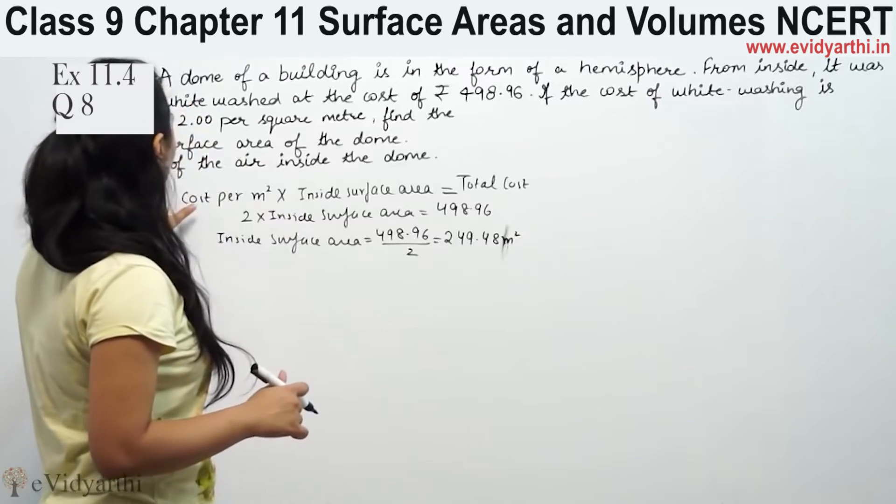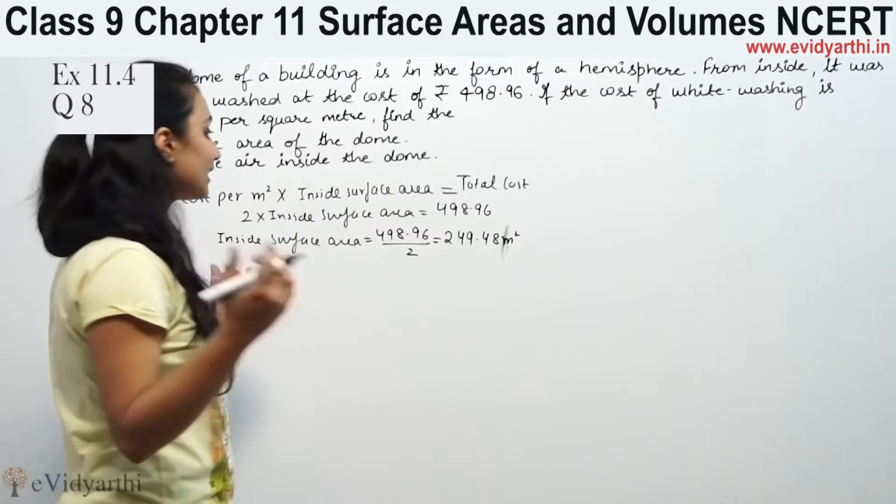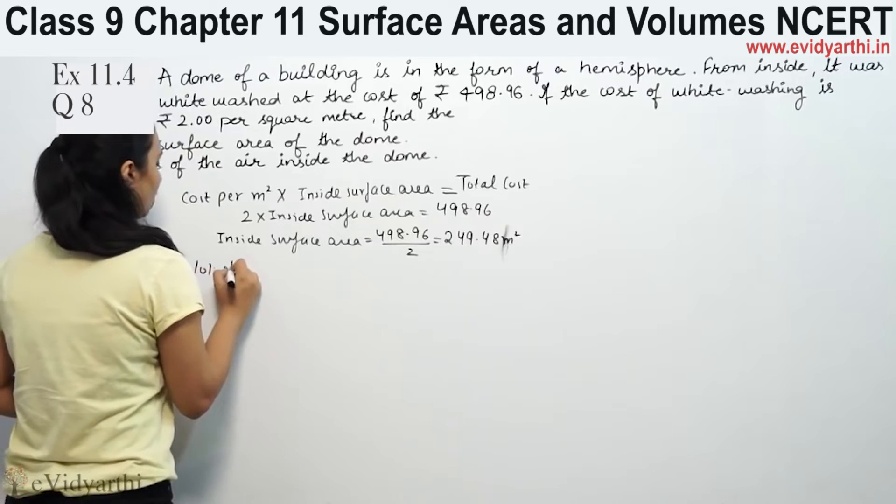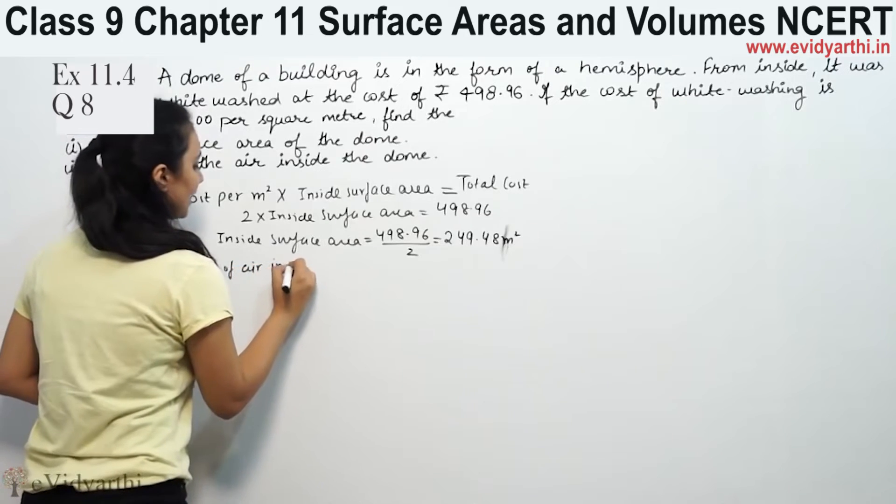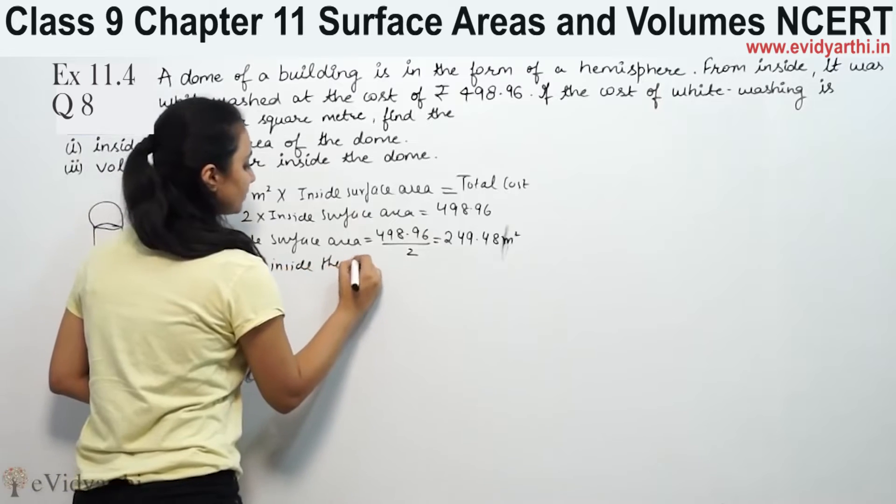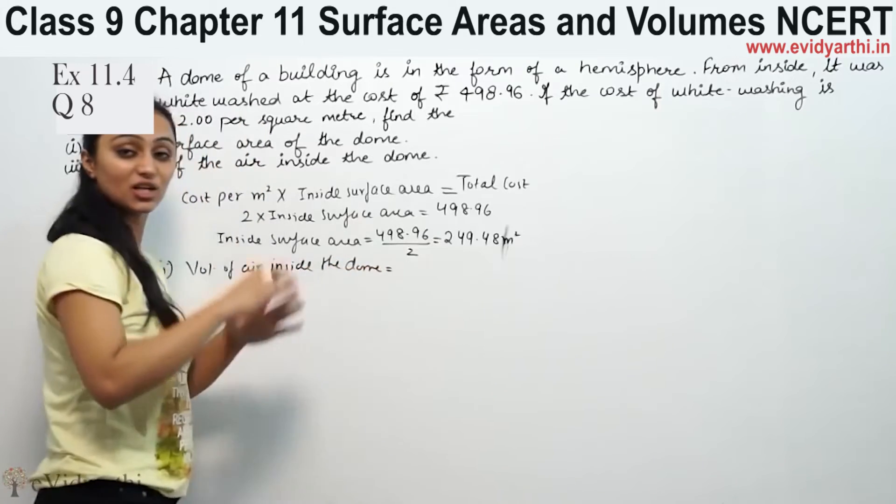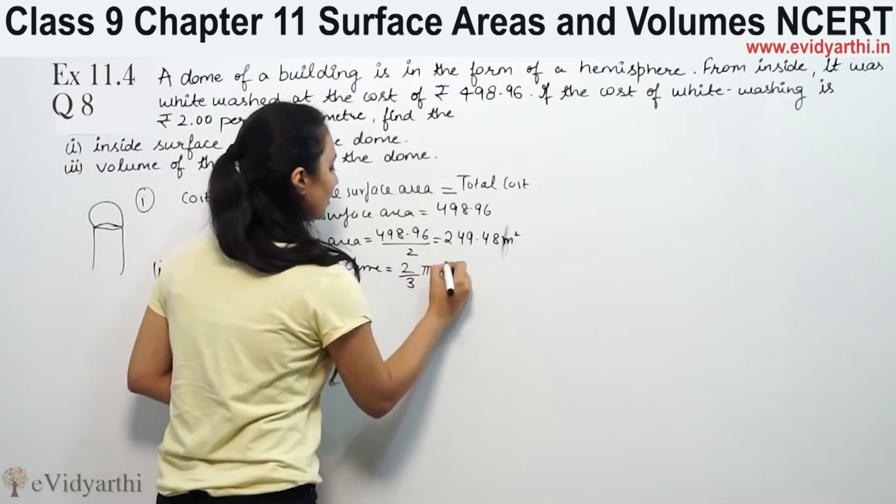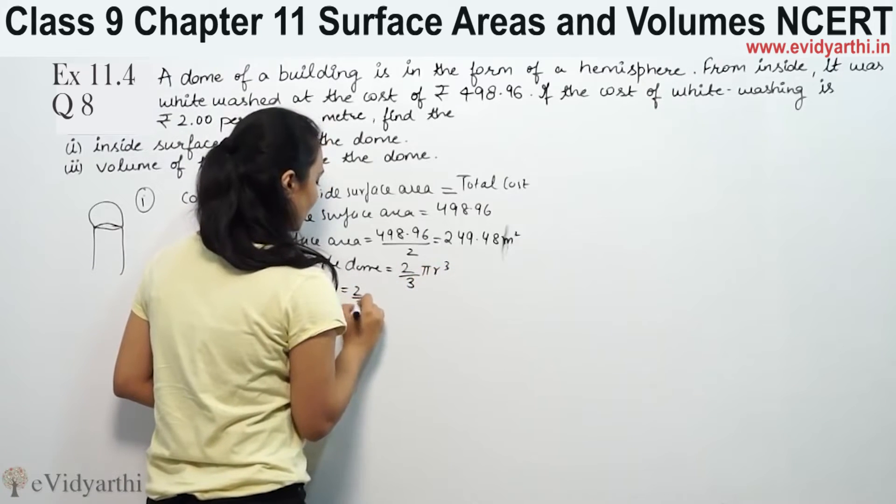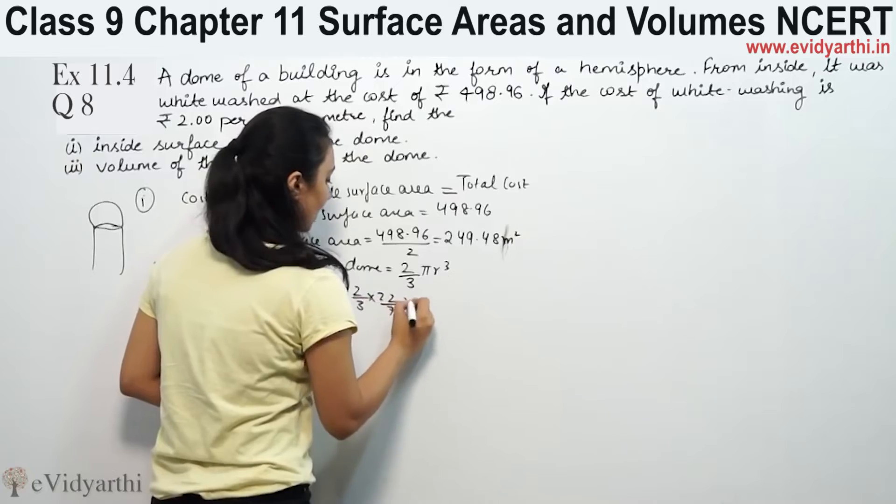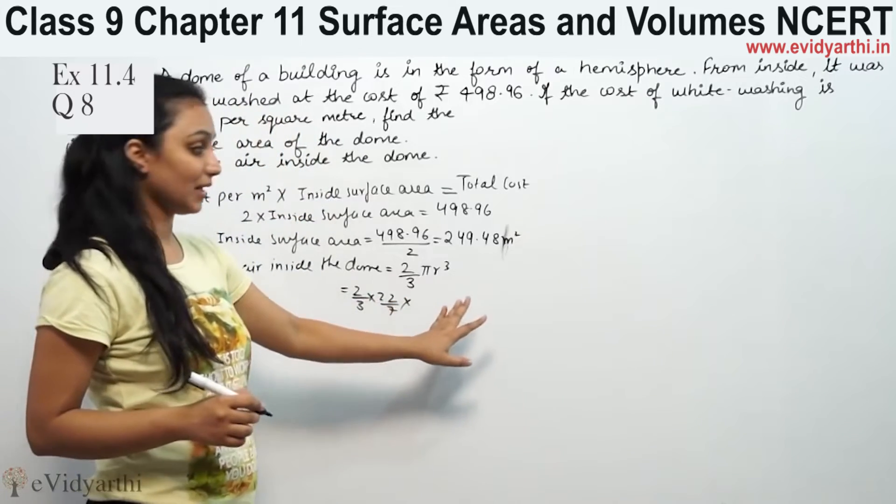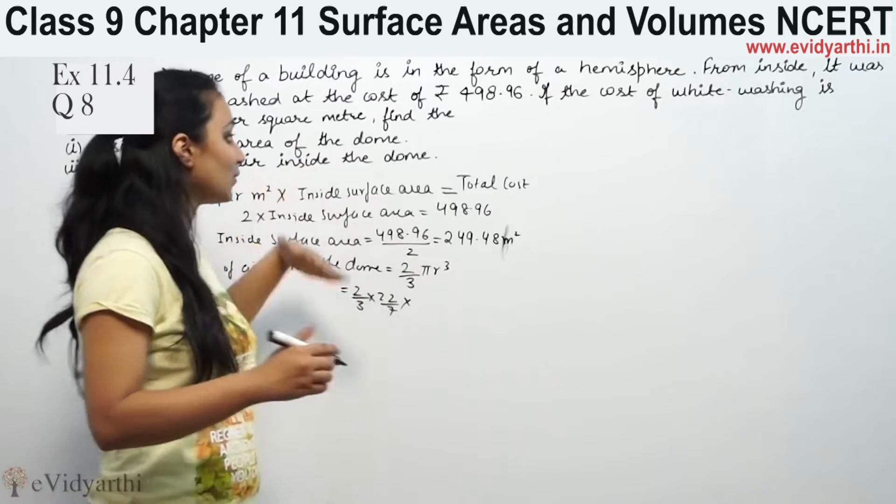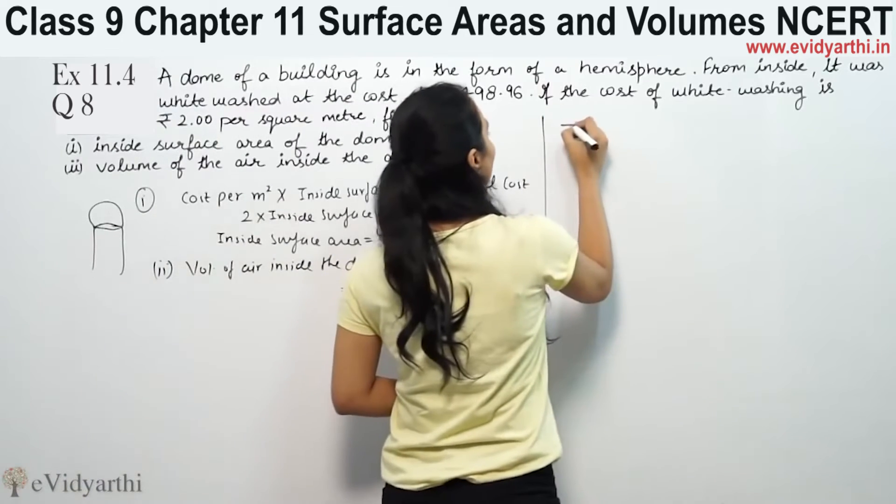Second part is volume of air inside the dome. So how much volume is the dome? Which is 2/3 π r³. We will use inside surface area to find the radius.